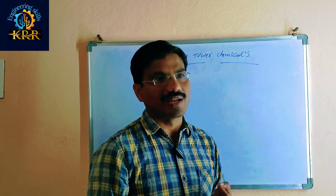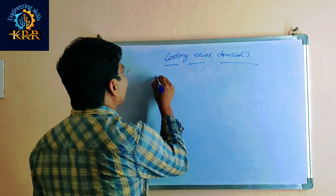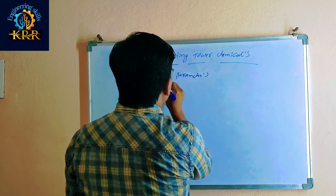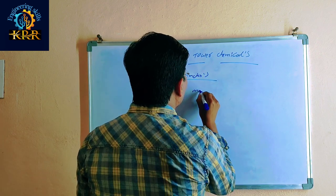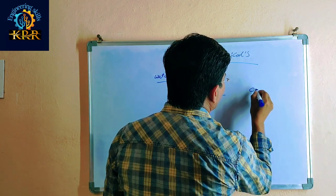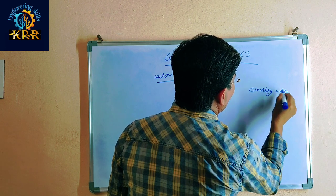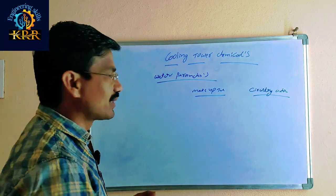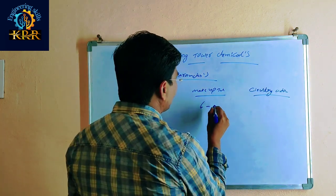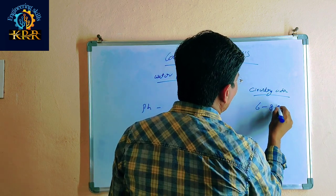Using these chemicals, we can control the water parameters. The parameters apply to both the makeup tank water and the circulation water. For pH value: in makeup water it should be maintained at 6 to 8, and in circulating water 6 to 8.5.